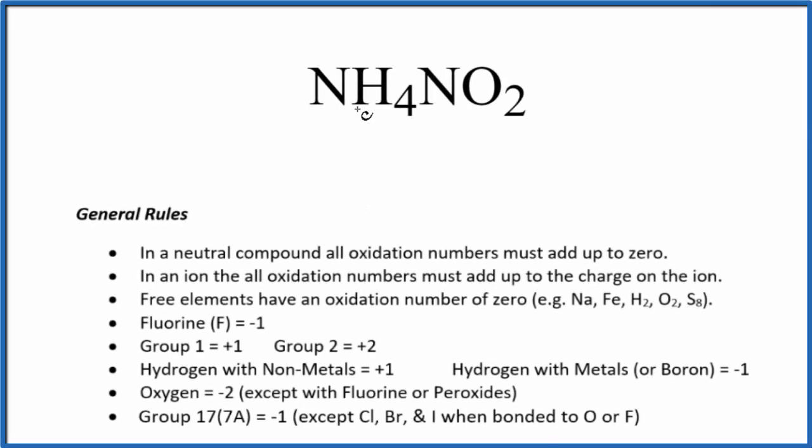In this video we'll find the oxidation number for each element here in NH4NO2, this is ammonium nitrite. Just looking at this, there's no negative or positive sign, so overall it's a neutral compound. All the oxidation numbers are going to add up to zero. The way to approach this is to think of this as ions.